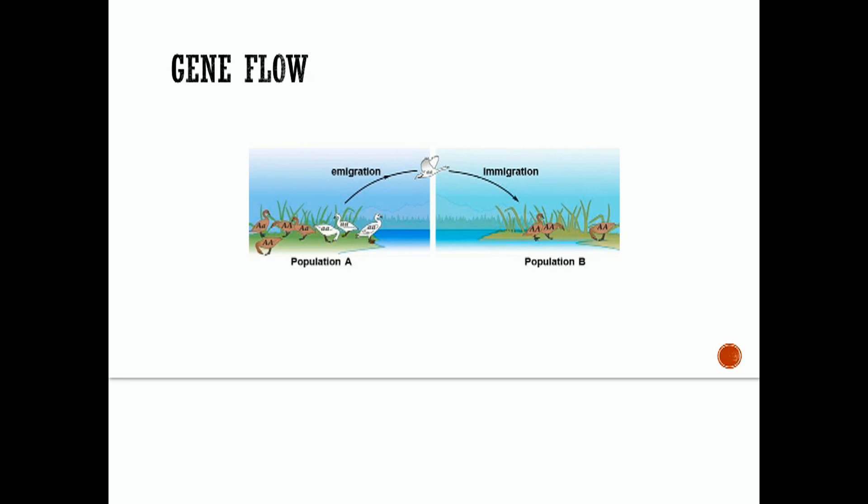Something called genetic drift and gene flow are two mechanisms that can change the genetic makeup of a population over time. Gene flow is the transfer of genetic information from one breeding population to another. Gene flow can be caused by many different events. For example, a storm with strong winds could blow pollen from one population of plants to another.